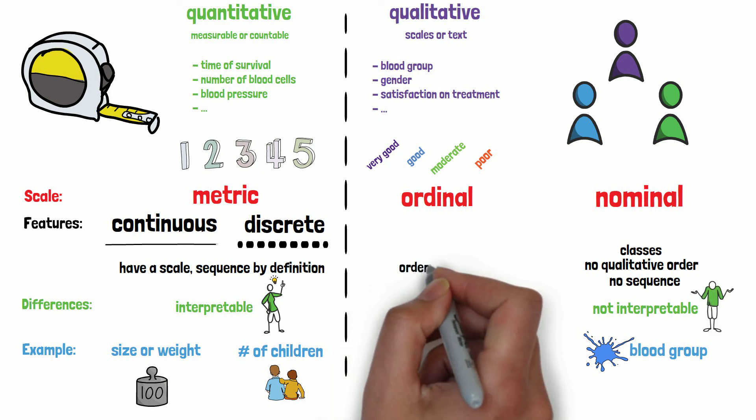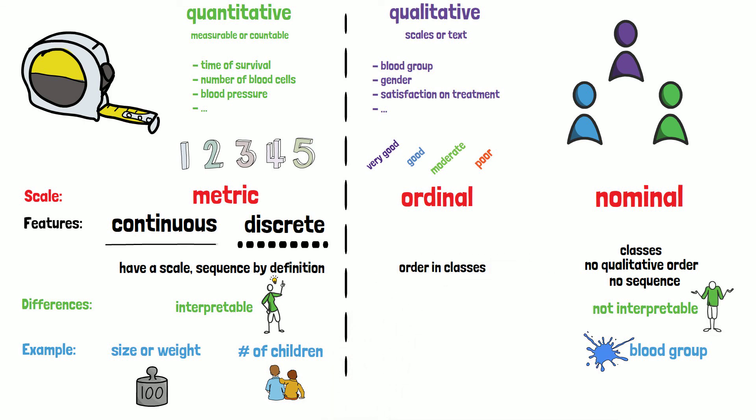Ordinal variables, on the other hand, as the name already says, have an order in their occurring classes, for example, measuring intensity, agreement or satisfaction from strong towards little. Distances between two classes are interpretable, but may not be comparable.